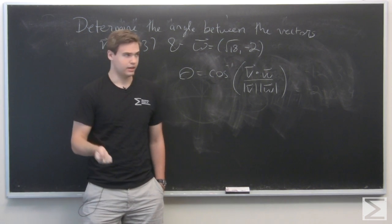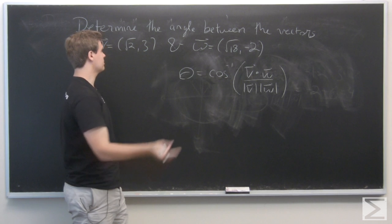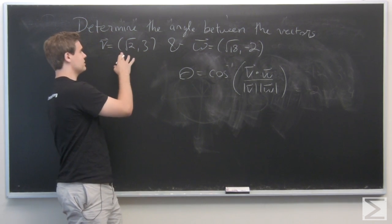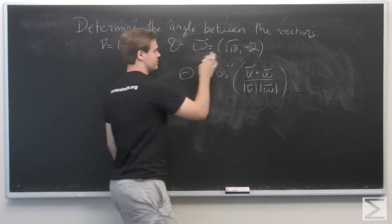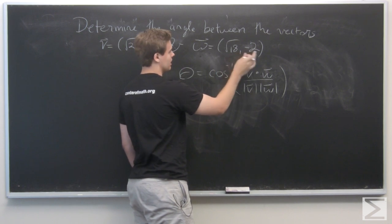And here, the problem at hand is to calculate the angle between two vectors v, which is square root of 2, 3, and w, which is the square root of 18, minus 2.